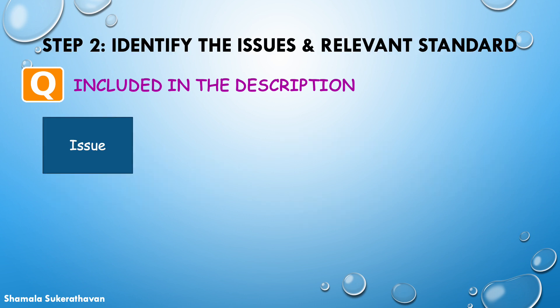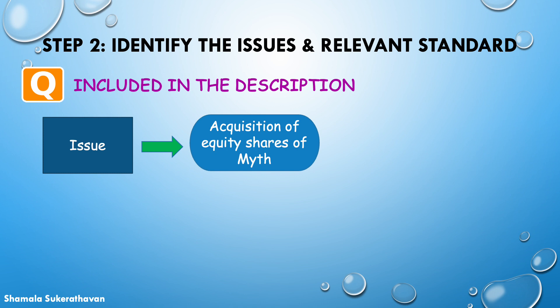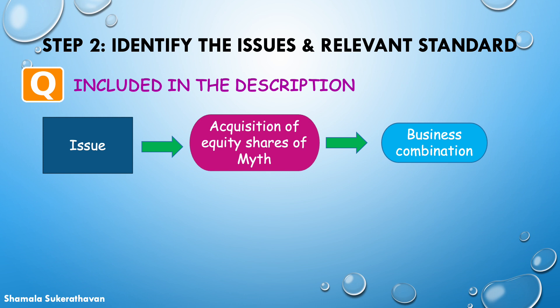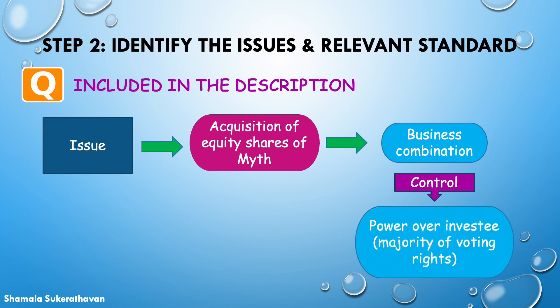In this question, there are two issues that need to be dealt with. Firstly, the acquisition of all of the equity shares of MIT by Legend. This results in a business combination, as Legend obtains control of MIT. One of the circumstances identified by IFRS 10 Consolidated Financial Statements indicating an investor has power over the investee — and thus Legend has control over MIT — is that the investor holds the majority of the voting rights of the investee.